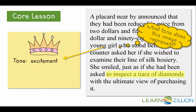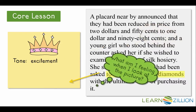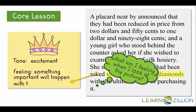Next, I ask myself, what tone does this image represent? As I said, tiaras belong to princesses, and Mrs. Sommers sees the stockings as if they were a tiara. The tone this image represents is one of excitement. Next, I ask myself, what am I feeling when I look at this picture? When I look at the picture I drew, I feel like something important will happen with these stockings, because they are being compared to something as important and glamorous as a tiara.